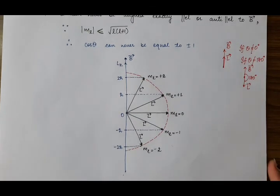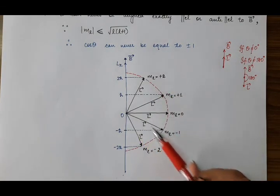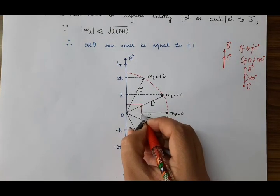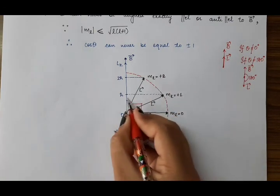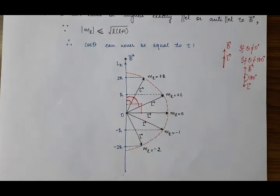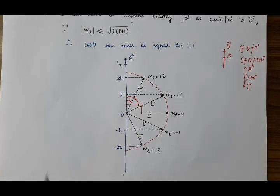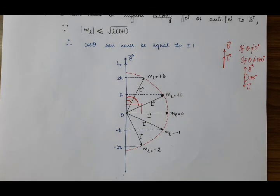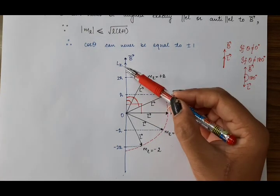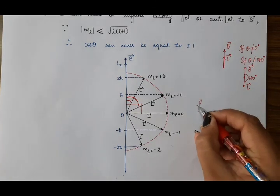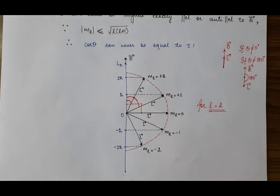So here you can see that because of the 5 values of cos theta corresponding to l equals 2, we have 5 orientations of L vector. These correspond to: theta for ML equals 0 (which is 90 degrees), theta for ML equals plus 2, theta for ML equals plus 1, theta for ML equals minus 1, and theta for ML equals minus 2. The magnitudes of LZ are 0, h-bar, minus h-bar, 2·h-bar, minus 2·h-bar respectively. These are the 5 possible discrete orientations of L vector with respect to B vector when l equals 2. Similarly, you can work out space quantization for l equals 1, l equals 3, and so on.